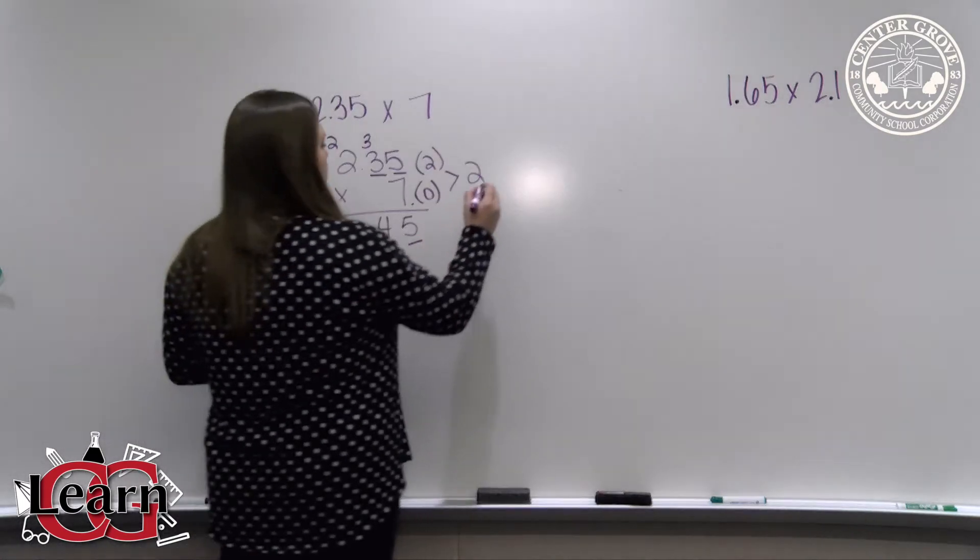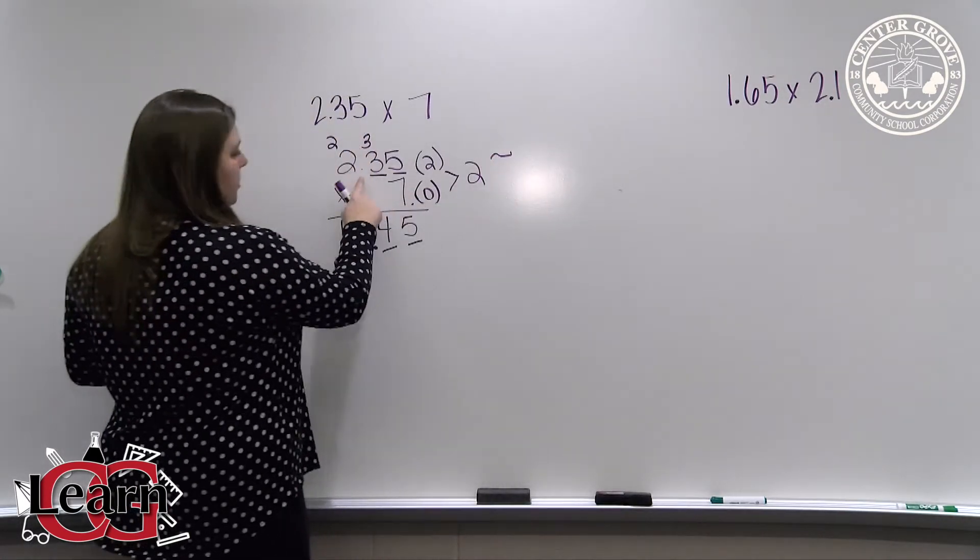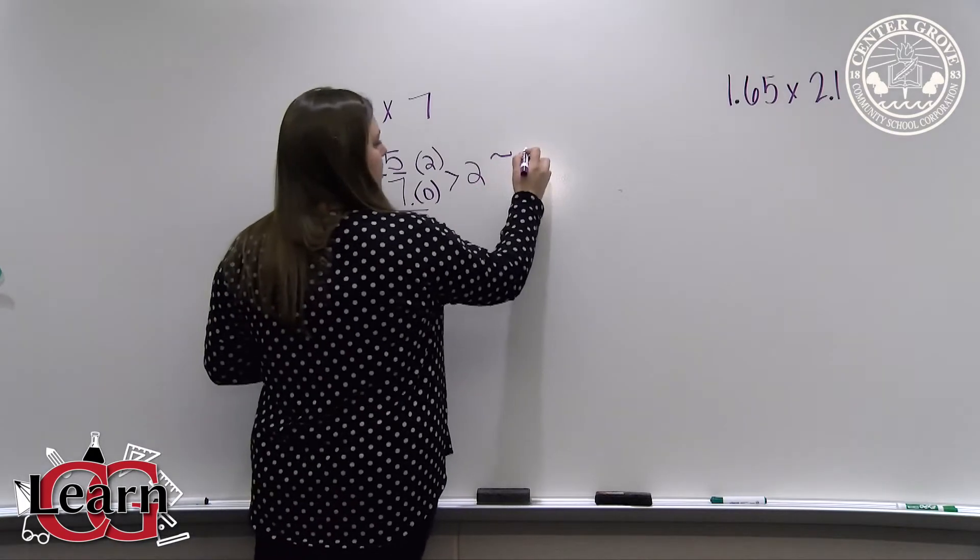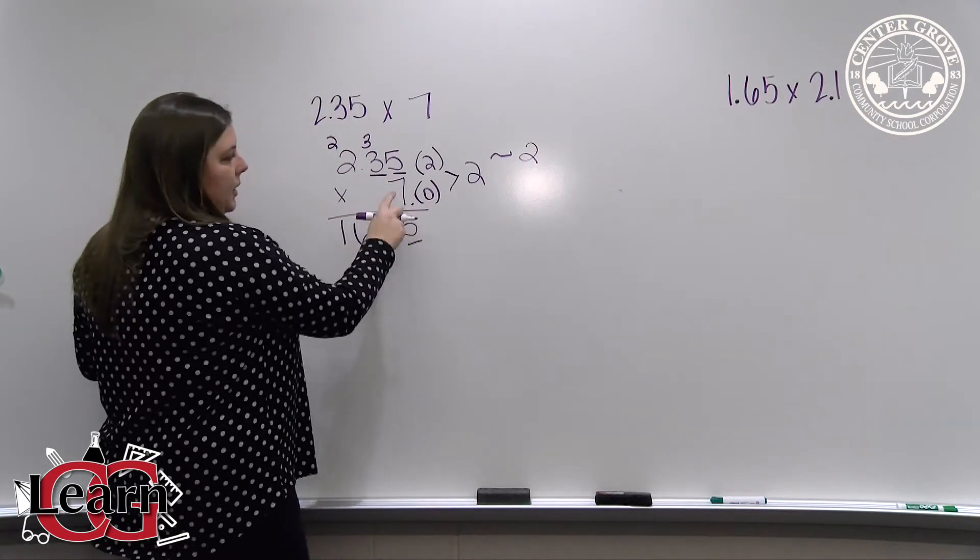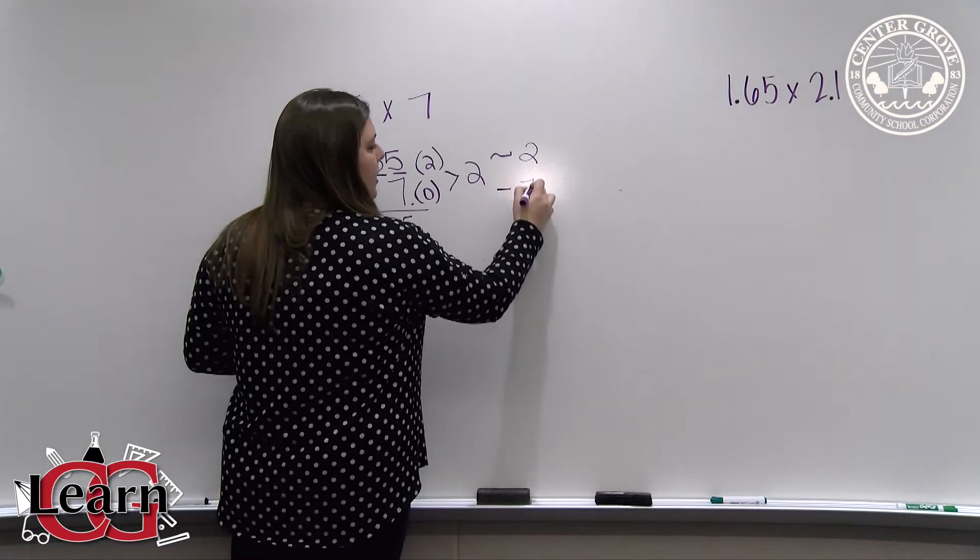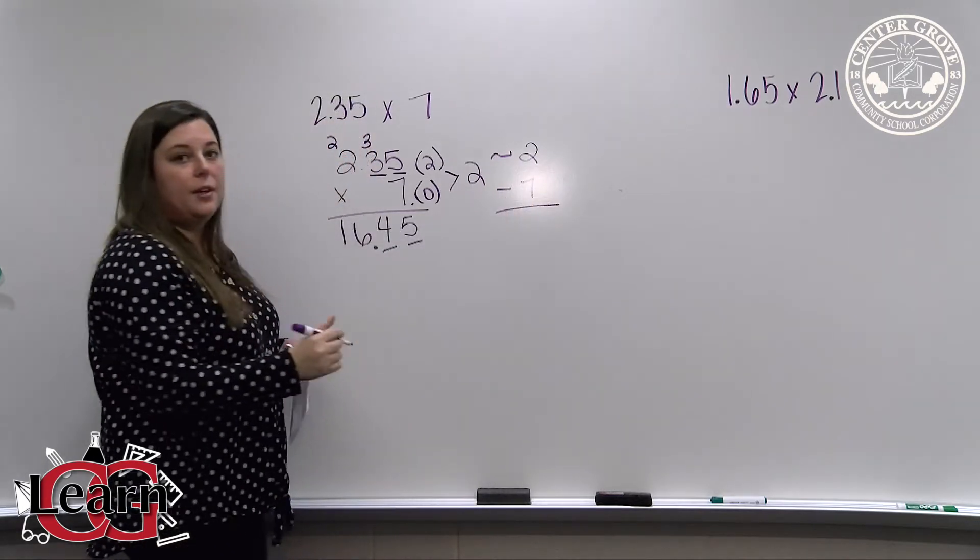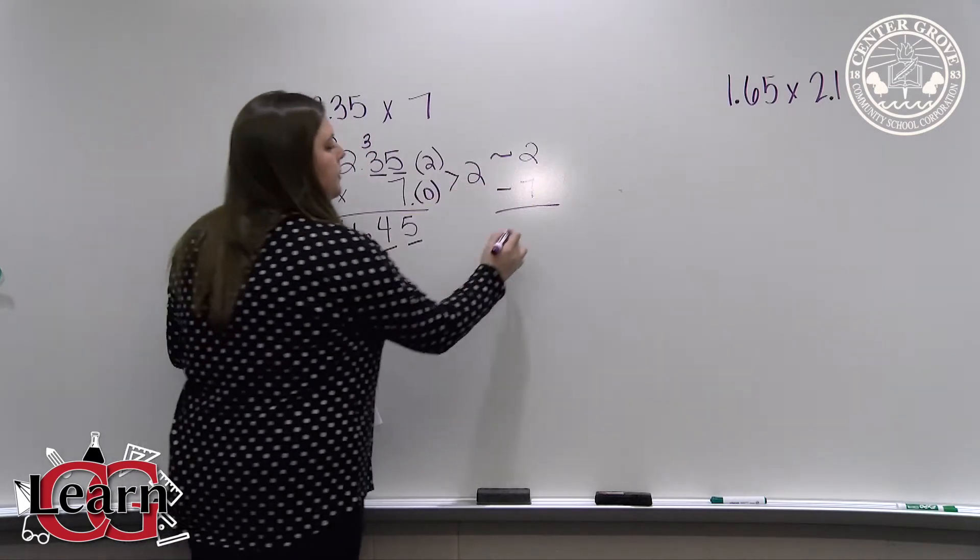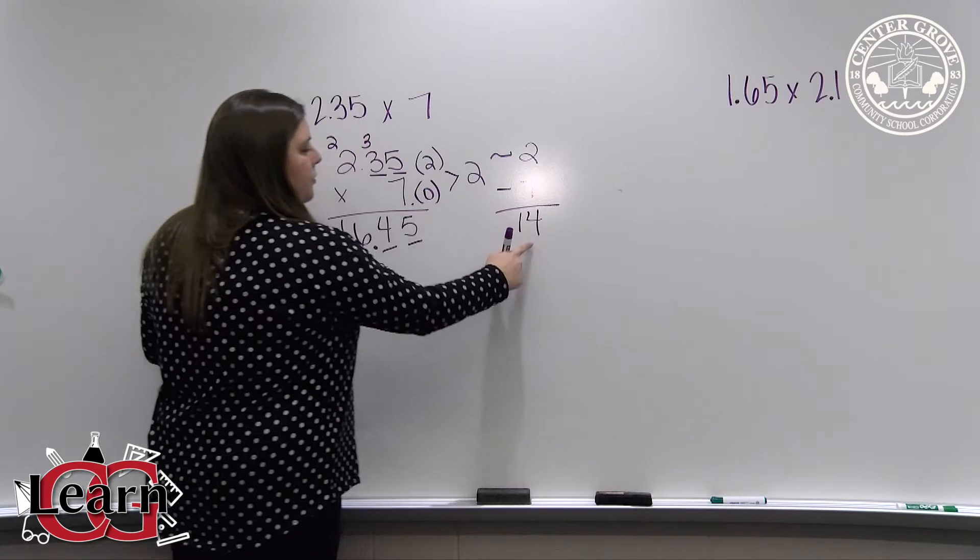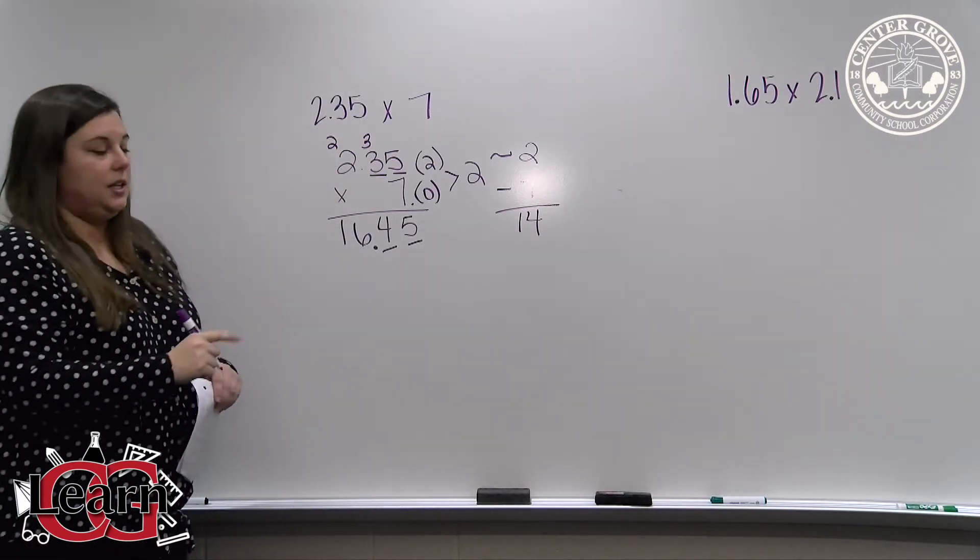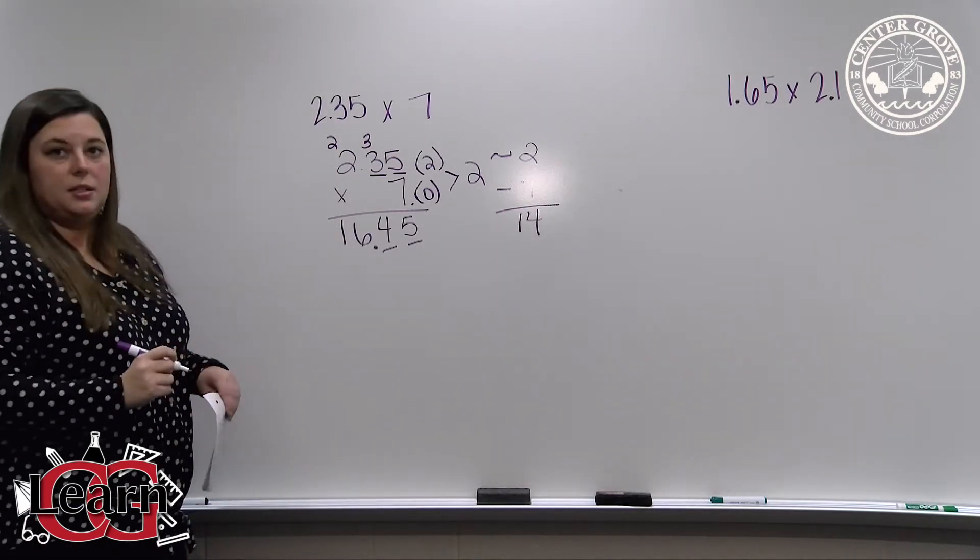We can check for reasonableness by rounding. 2 and 35 hundredths is rounded to 2. We can keep 7 itself because we know our multiples of 7. So 7 times 2 is 14. 14 is very close to 16, so we know our decimal point is in the correct location.